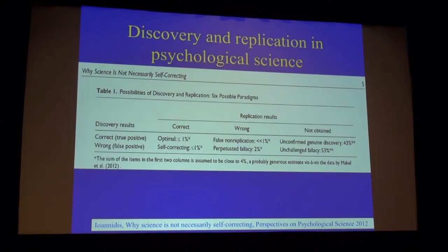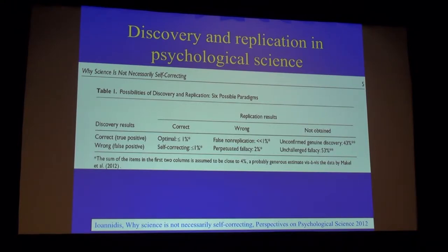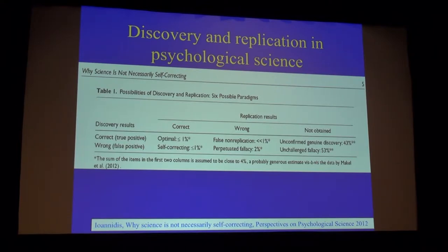Here's one field that went through a reproducibility crisis in the last few years — psychology. For a long time, psychology didn't want to have replication; it was considered a sine qua non that you should not replicate because you're wasting your time. About six years ago, I put together whatever empirical data existed in that field, and the summary I created showed that less than 1% of the literature is likely to be optimal — meaning someone found a correct result that was also replicated. Less than 1% was self-correcting, and less than 1% was false non-replication.